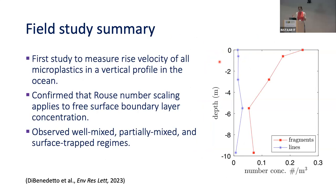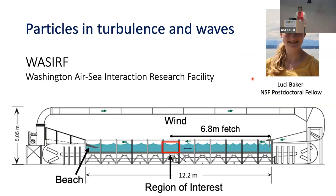To summarize the field work: this confirmed that Rouse number scaling can apply to a free surface boundary layer as well as a bottom boundary layer, and we observed these different regimes. Sorting by particle type is also really helpful when you don't have rise velocity measurements for every individual particle. But we haven't said anything about transport yet, which is what I'm really interested in. I'm really an experimentalist in the lab, so now I'm going to show some laboratory work where we can blow wind over a free surface, generating similar conditions to those we see in the ocean.